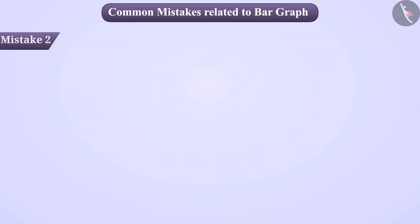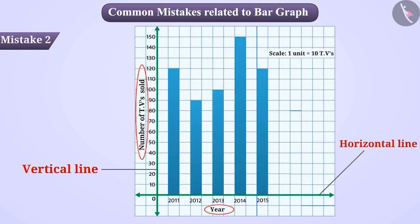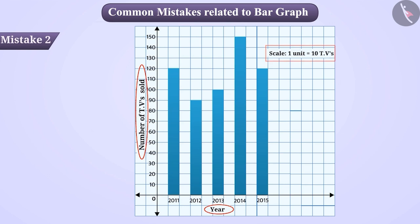Mistake 2. Some students fail to label the horizontal line and vertical line of the bar graph. Similarly, they fail to write the scale. Apparently, they do not consider it important enough to label the lines or write the scale, or they simply forget to write them.